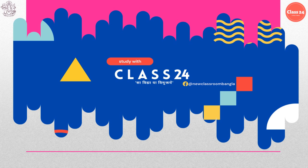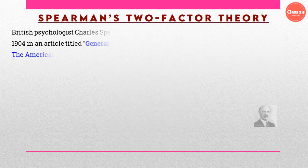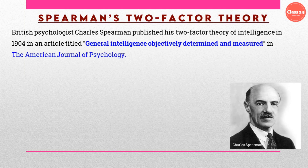Hello and welcome to our channel. Today we will discuss Spearman's two-factor theory. British psychologist Charles Spearman published his two-factor theory of intelligence in 1904 in an article titled 'General Intelligence Objectively Determined and Measured' in the American Journal of Psychology.